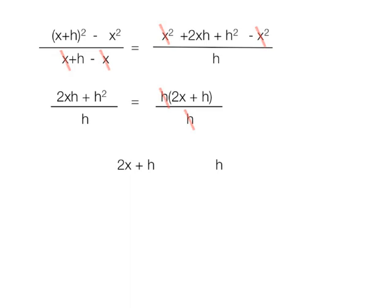Remember, we're going to let h go to zero or approach zero. So we can rewrite it as the slope is equal to 2x, because we're going to ignore h. It's almost zero. h is almost zero.